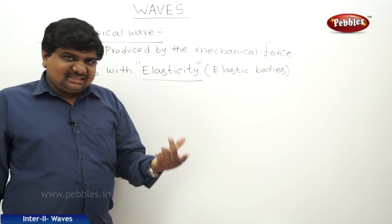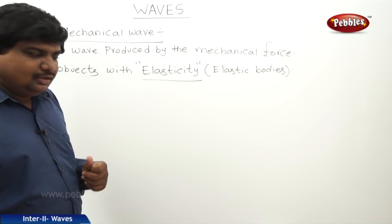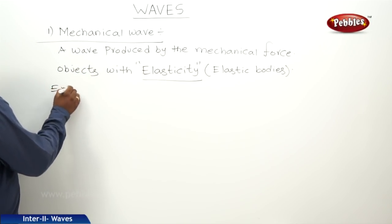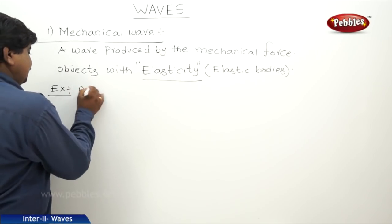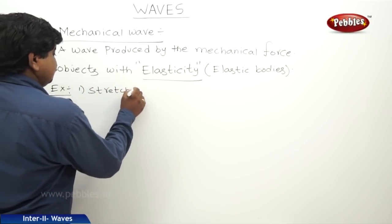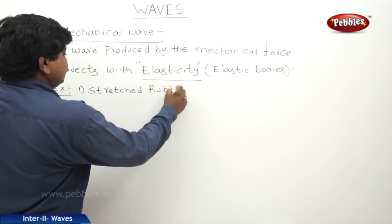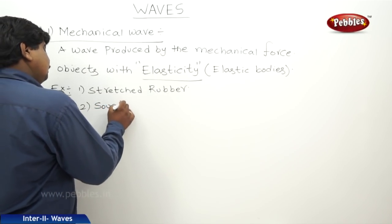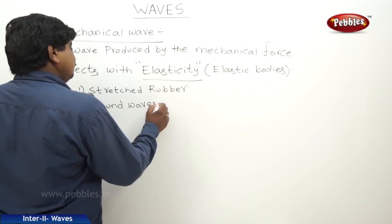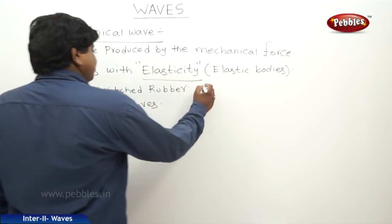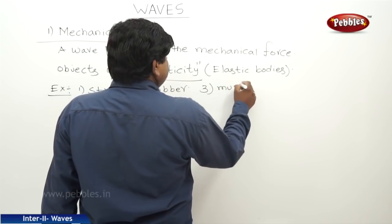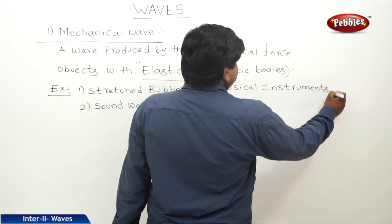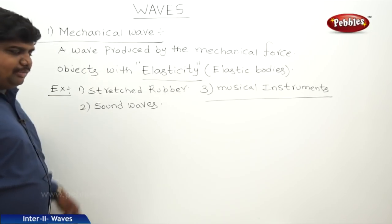What are the daily life examples of mechanical waves? Examples include a stretched rubber band, sound waves, and musical instruments. These are all examples of mechanical waves.